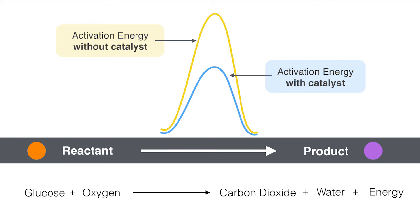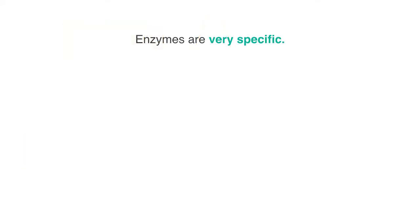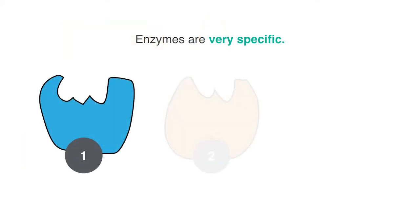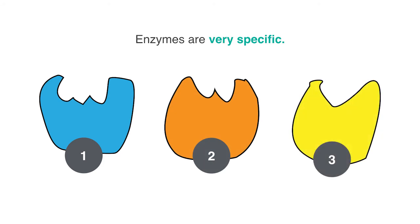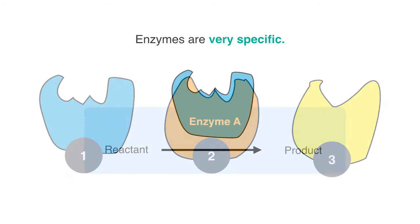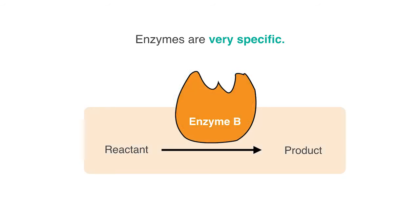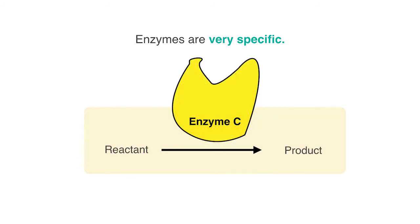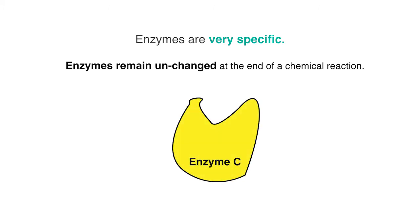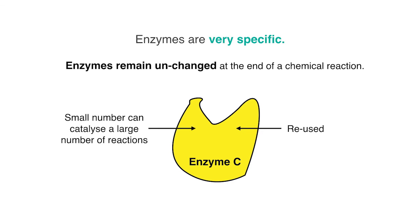That's the main idea about enzymes in metabolism. One important aspect to know is that enzymes are very specific. Here is a representation of three different types of enzymes — for every chemical reaction, a specific enzyme catalyst is used to speed up that reaction. Even though specific enzymes are used, they remain unchanged at the end of a chemical reaction. This means they can be reused, and a small number of enzymes can catalyse a large number of reactions. Enzymes are handy little things that keep the body running smoothly.